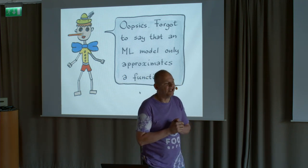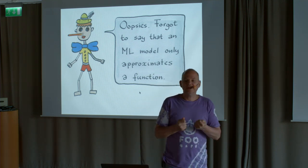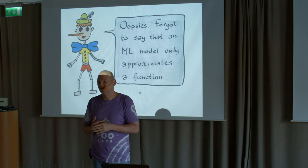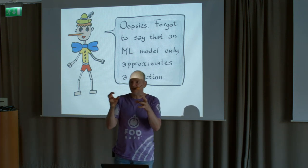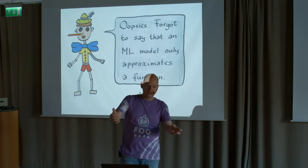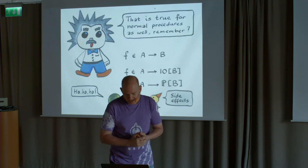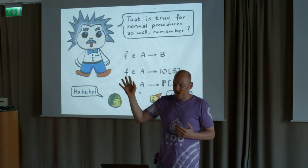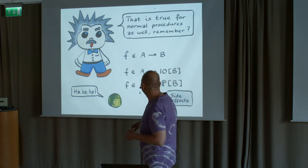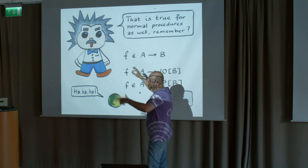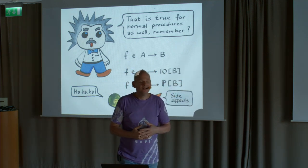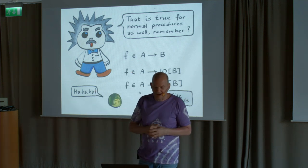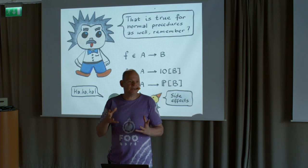One thing I should mention: the functions that this machine learning algorithm creates are only approximations. They don't give you a real function — they give you something that returns a probability distribution. But the good news is that a normal function is also an approximation. If you think you have a function from A to B, it really is a function that has side effects — for Haskell people, it lives in the IO monad. And these models, for the same reason, live in a monad — they live in the probability monad. You can never escape these kinds of side effects, but it is fine.